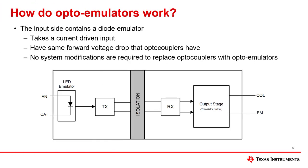So how do optoemulators work? Internally to the optoemulators, a diode emulator takes a current-driven input. This diode emulator has the same forward voltage drop that optocouplers have, allowing for optoemulators to emulate the behavior of optocouplers,